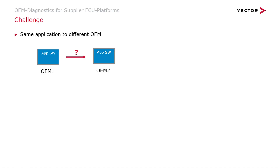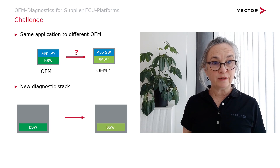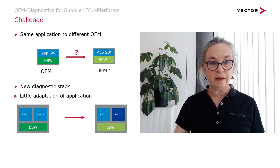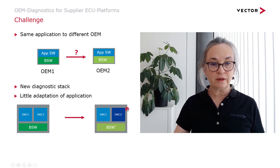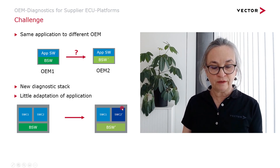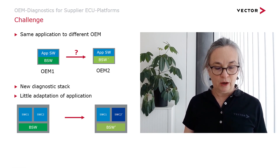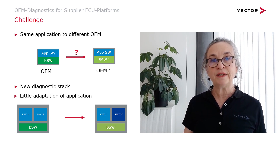Which Tier 1 doesn't want to develop a project and sell it to several OEMs with as little effort as possible, at the lowest price and best quality? Changing the OEM in a project means adapting the basis software modules and also adapting some software components of the application.